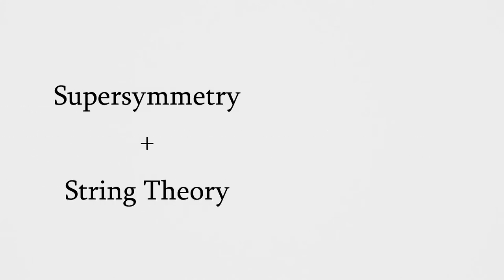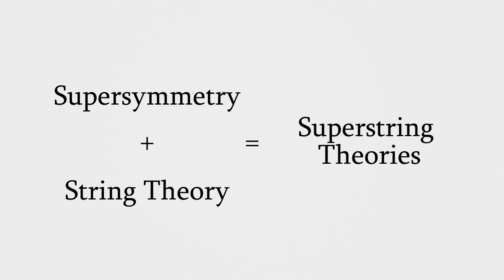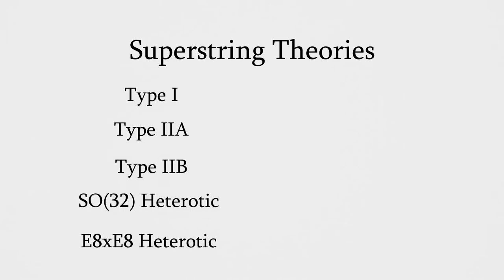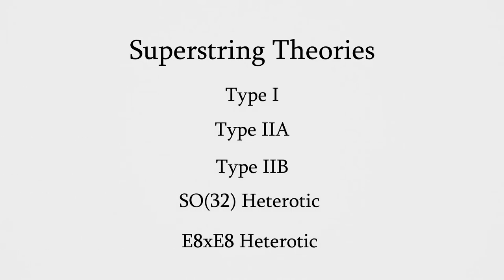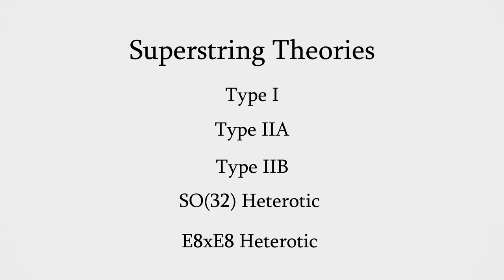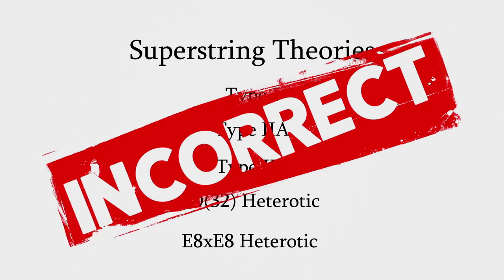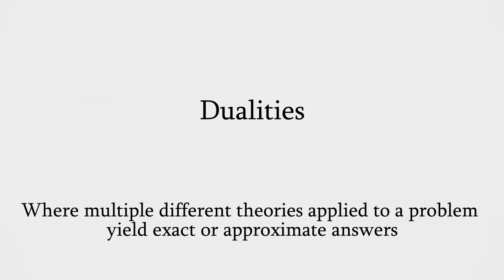Supersymmetry can also be applied to string theory, and this gave rise to five superstring theories, each with ten total dimensions. These superstring theories individually explain a number of questions in quantum physics, and do so extremely well. However, these superstring theories were found to be perturbative, with no single one seeming to be a theory of everything, and it looked like string theory had failed to reveal the nature of our universe. There was until an American physicist named Edward Witten noticed that the five string theories could be mapped to one another by certain conditions, known as dualities.